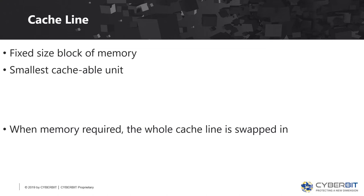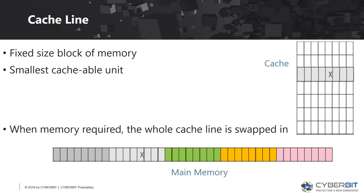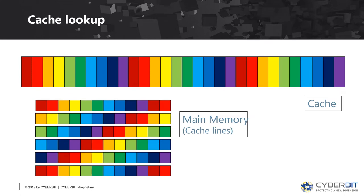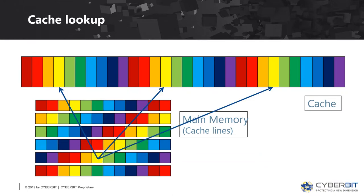When I need any chunk of memory, even one bit, I have to cache the whole cache line. This reduces fragmentation and makes swapping fast. Every cache line has a 'color', and each color can only go into a certain small subset of slots in the cache. So when I look for a cache line, I only need to check that small subset of slots.